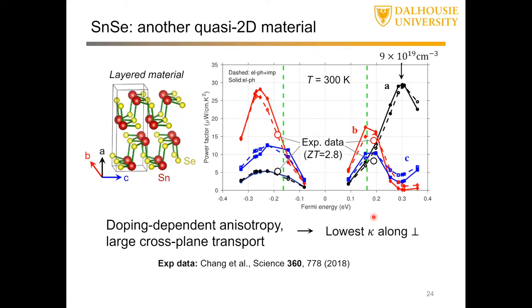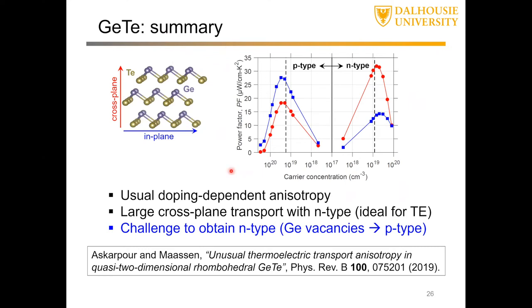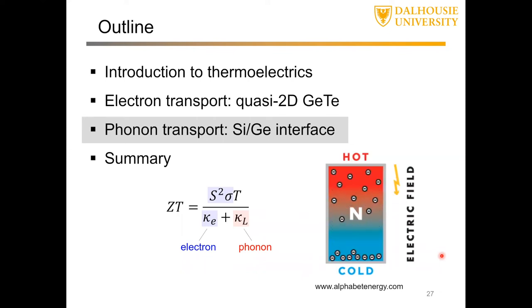We've used this technique with various materials to get new insights into scattering properties and their relation to transport. To summarize the germanium telluride study: the key finding is high cross-plane conductivity, and the ability to decouple the preferred electron transport direction from the preferred phonon transport direction — which turns out to be very good for thermoelectrics. Now I'll quickly move to the second example: phonon transport across the silicon-germanium interface.